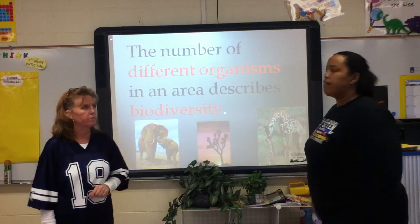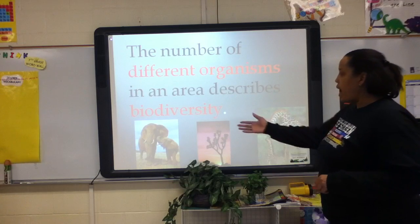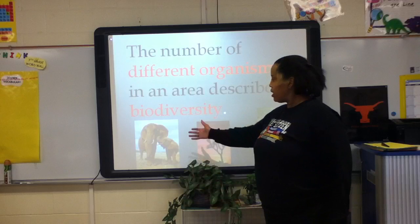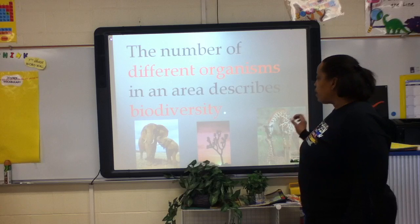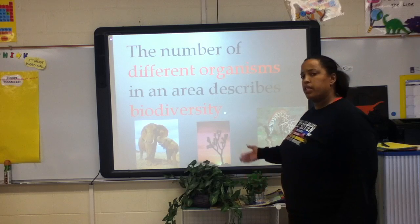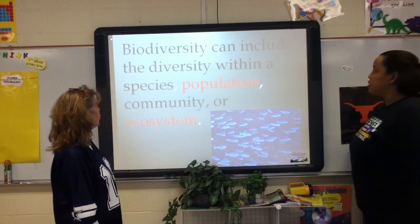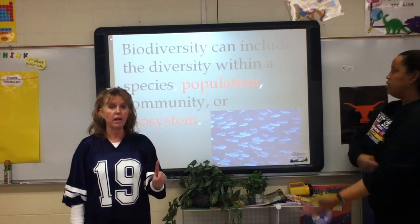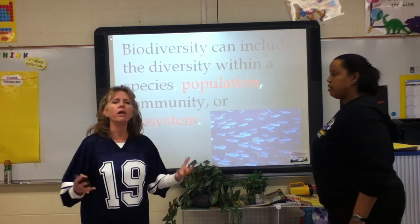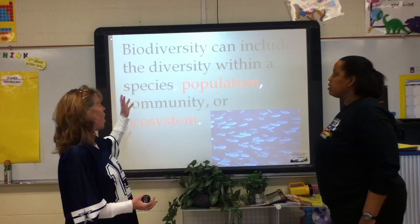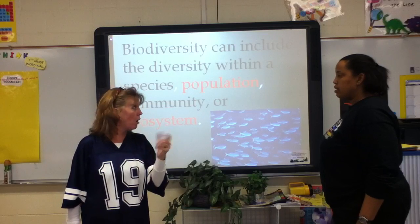Biodiversity tells us the number of different organisms that can be found in an area. We have an example of a grassland here — you can see several different organisms: the elephant, the acacia tree, the giraffe, and the plants down below. Biodiversity can include the diversity within a species, like cats or dogs, in a population, a community, or even an ecosystem. We're mainly going to focus on ecosystems or small microhabitats.